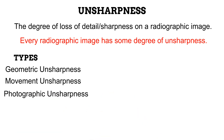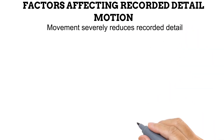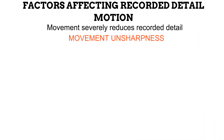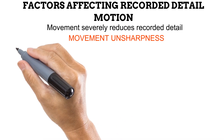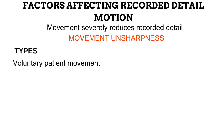Let us look at how these types of unsharpness relate to the factors that affect recorded detail. First is motion. Have you ever tried taking a photograph of a child that wouldn't stay still? You would most likely get a blurry image — the same effect motion has on a radiographic image. Motion severely degrades recorded detail, and the associated type is movement unsharpness. The first type is unsharpness due to voluntary patient movement, which occurs in uncooperative patients or those not sufficiently instructed to stay still. This is best addressed by giving proper instructions and utilizing appropriate immobilization methods.